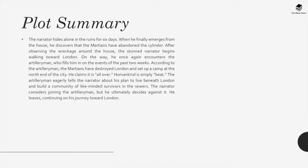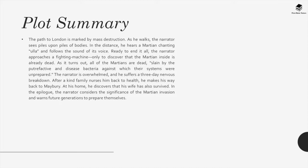The stunned narrator begins walking toward London. On the way, he once again encounters the artilleryman, who fills him in on the events of the past two weeks. According to the artilleryman, the Martians have destroyed London and set up a camp at the north end of the city. He claims humankind is simply beaten. The artilleryman eagerly describes his plan to build a community of like-minded survivors in the sewers, but the narrator ultimately decides against joining him and continues toward London. The path is marked by mass destruction and piles of bodies. Following the sound of a Martian chanting 'Ulla,' the narrator approaches a fighting machine, only to discover that the Martian inside is already dead — all the Martians are dead, slain by putrefactive and diseased bacteria against which their systems were unprepared. The narrator suffers a three-day nervous breakdown, but after a kind family nurses him back to health, he makes his way back to Maybury, where he discovers his wife has also survived. In the epilogue, the narrator considers the significance of the Martian invasion and warns future generations to prepare themselves.